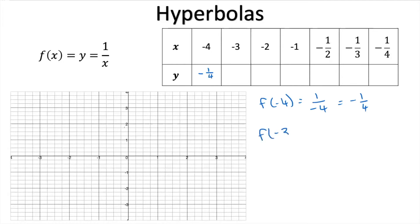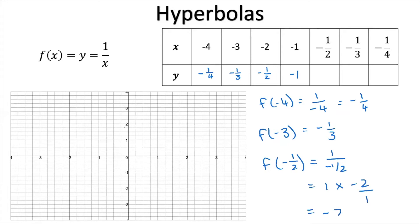Similarly, f(negative 3) gives us negative 1 over 3, and the same for negative 2 and negative 1. Now notice how this works with a fraction: f(negative 1/2) gives us 1 over (negative 1/2), and remembering to tip and times when dividing by a fraction, we get negative 2. It's basically like we flipped our fraction around. Similarly, negative 1/3 gives y = negative 3, and negative 1/4 gives y = negative 4.